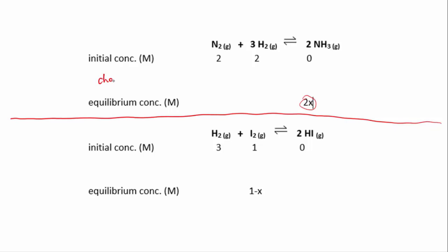So let's put in our change row. We started with zero ammonia and then end up with 2x, so our change is positive 2x. Whatever x is, we have produced 2x worth of ammonia.